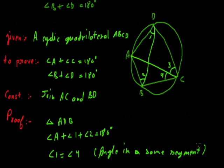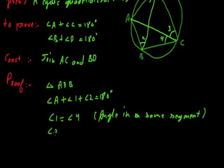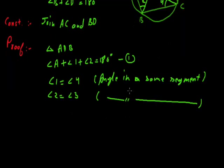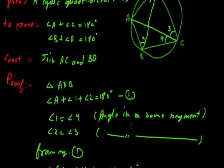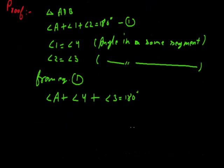Similarly, angle 2 is formed by arc AD and angle 3 is also made by arc AD. So angle 2 equals angle 3, again because of the angles in the same segment theorem. Substituting in equation 1: in place of angle 1 we put angle 4, and in place of angle 2 we put angle 3, giving us angle A plus angle 4 plus angle 3 equals 180 degrees. From the figure, angle 3 plus angle 4 is nothing but angle C. So angle A plus angle C equals 180 degrees.